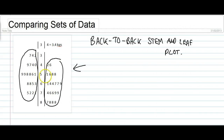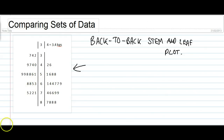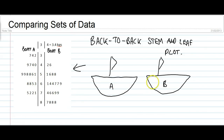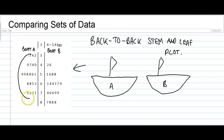In this case, the two data sets are measuring the weight of fish caught by two boats. Each of these boats went out fishing and they both tried to catch 21 fish. These are the weights of the fish that boat A caught, and these are the weights of the fish that boat B caught.